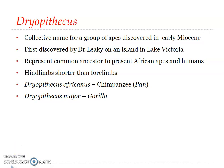Regarding the evolution of man, the first fossil we will learn about is the apes in the fossil record. The first one is Dryopithecus — a collective name for a group of apes discovered in the early Miocene. It was first described by Dr. Leakey on an island in Lake Victoria, and today it is believed that Dryopithecus represents a common ancestor to present-day African apes and humans.